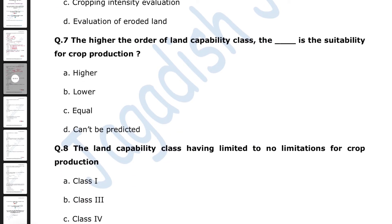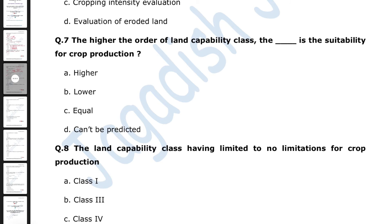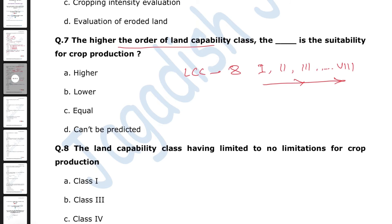Next question: the higher the order of land capability class, the lower the suitability for crop production. The total number of land capability classes is eight. Classes are numbered one through eight — as you go from class one to class eight, there are more limitations and suitability for crop production becomes lower. Color notation: class one is green, class two is yellow, and towards class eight the color becomes brown. Class one has the fewest limitations.